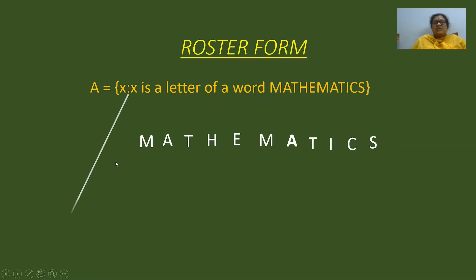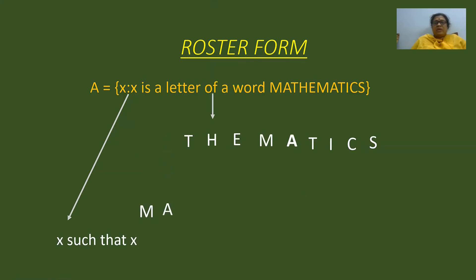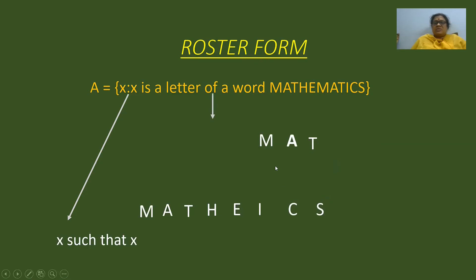Next: x such that x is a letter of the word MATHEMATICS. What are the letters in mathematics? We take all the letters and represent them in roster form. The letters are M, A, T, H, E — and again M appears, but we take each letter only once. Then I, C, S — and M, A, T already appeared, so we don't take them again. We put them in a flower bracket, and this is nothing but a roster form.